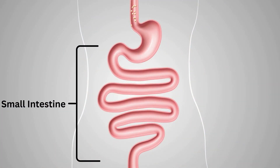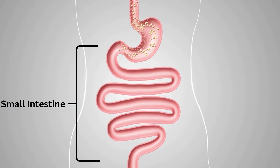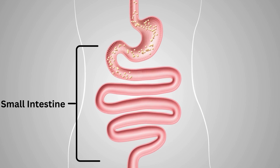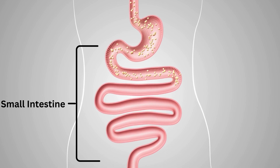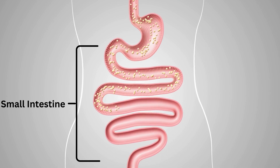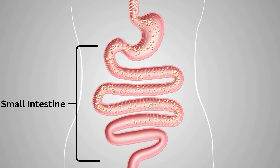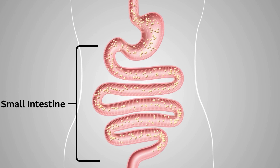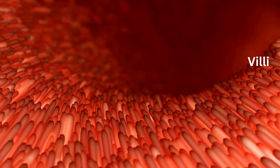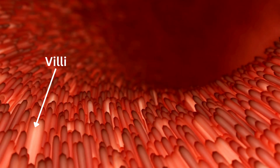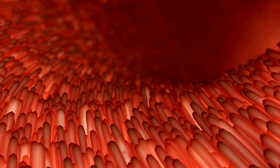Now we move on to the small intestine, a remarkable organ measuring about 20 feet long. Here, most of the digestion and nutrient absorption take place. The walls of the small intestine are lined with tiny finger-like projections called villi, which increase its surface area for maximum nutrient absorption.